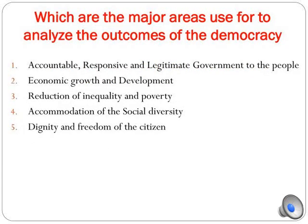Now let us see the major areas used to analyze the outcome of democracy. We see that democracy is accountable, responsive, and legitimate. Through democracy, we have economic growth and development. We also say there is a reduction of inequality and poverty. The accommodation of social diversity is present, and dignity and freedom of citizens is there in democracy. We are going to discuss all these major areas in detail to know the outcome of democracy.